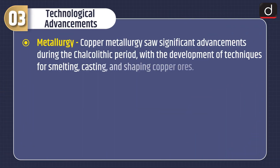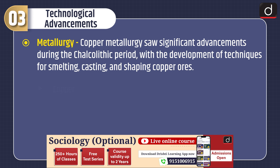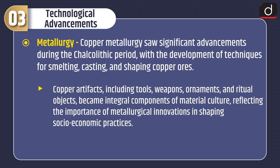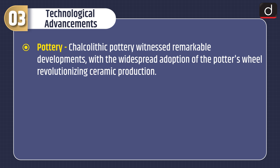Regarding technological advancements, copper metallurgy saw significant advancements during the Chalcolithic period with the development of techniques for smelting, casting, and shaping copper ores. Copper artifacts — including tools, weapons, ornaments, and ritual objects — became integral components of material culture, reflecting the importance of metallurgical innovations in shaping socio-economic practices.